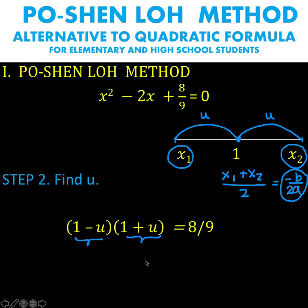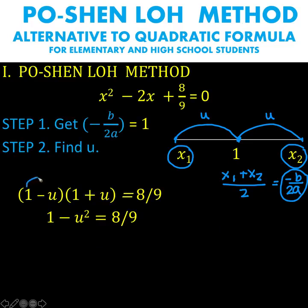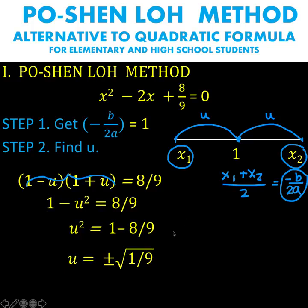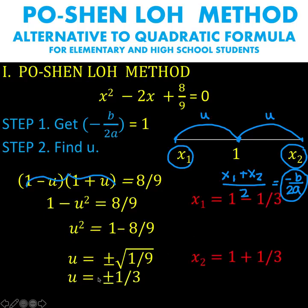Multiplying the quantity 1 minus u times 1 plus u, we arrive at the difference of two squares: 1 squared minus u squared equals 8 over 9. Solving for u squared, we have u squared equals 1 minus 8 over 9, which equals 1 over 9. Taking the square root of both sides, we get u equals plus or minus the square root of 1 over 9, which simplifies to u equals plus or minus 1 third.